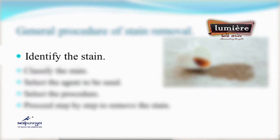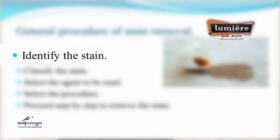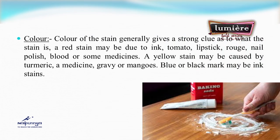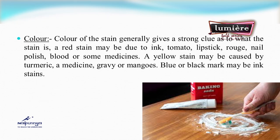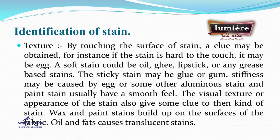For the identification of a stain, the first step is to identify it, as this helps in selecting the reagent and procedure for removal. Different stains show different characteristics and may be identified based on their color, texture, or odor. The color of a stain generally gives a strong clue — a red stain may be due to ink, tomato, lipstick, nail polish, blood, or some medicines.